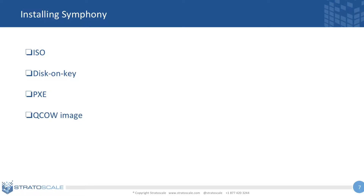We're going to show you how we can deploy a cluster. We currently have four nodes and we're going to deploy the four nodes, configure it, and we'll see how easy it is to produce a cluster and already start your VMs or whatever you need. Currently for Symphony, we have four ways to install: by ISO, by disk on key, by PXE, or by an image of QCOW.